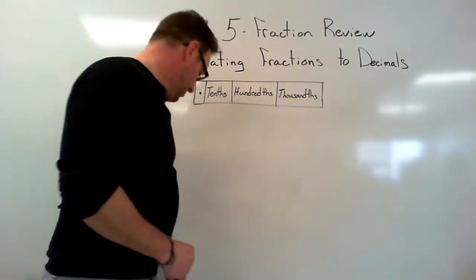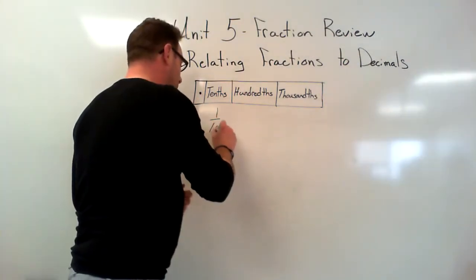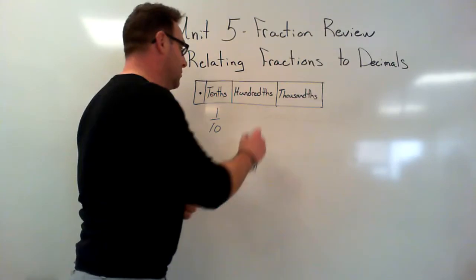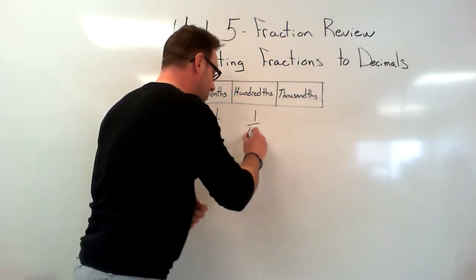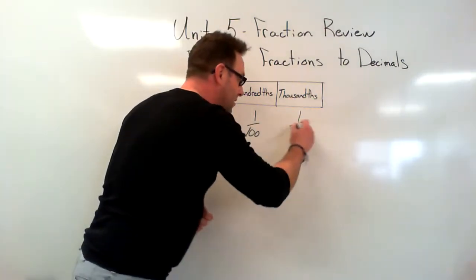Well, if we're talking about tenths, we have 1 over 10. We're talking about hundreds, the denominator is 100. If we're talking about thousands, the denominator is 1000.